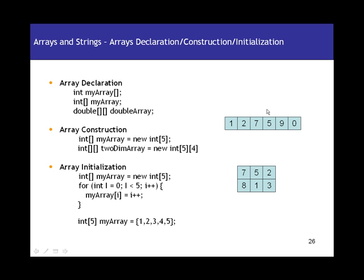For example, if you take roll numbers in this class and you want to store all the roll numbers — say there are 10 students, you will be storing roll numbers 1 through 10 in a variable called roll number. You can do that using Arrays. When we talk about arrays, there are three main things to discuss: array declaration, array construction, and array initialization. Let's start with array declaration.